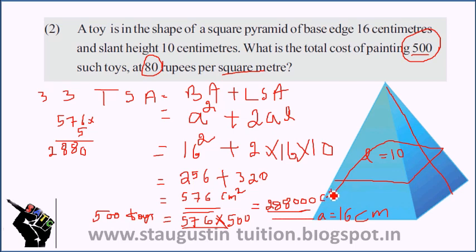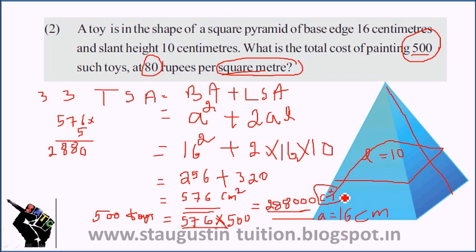Now we need to convert this. We are going to convert it to square meters. We will write it as square meters. 1 meter square is equal to m². We have to convert centimeter square into meter square.